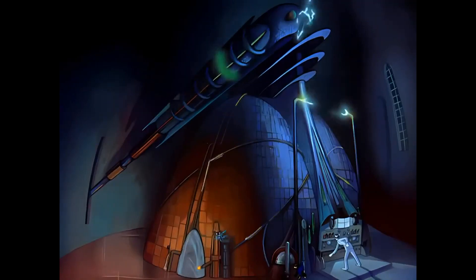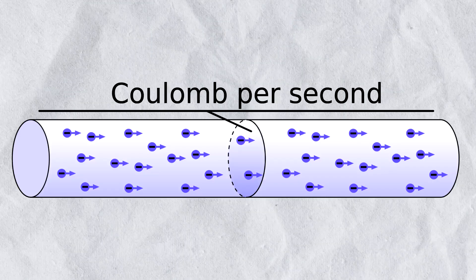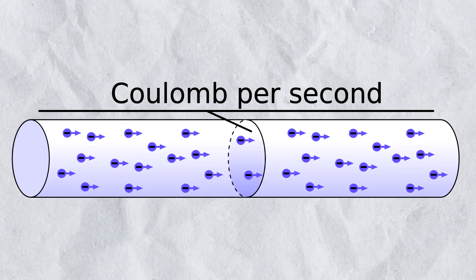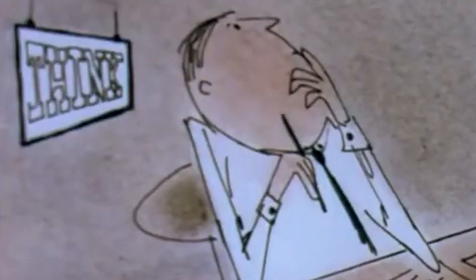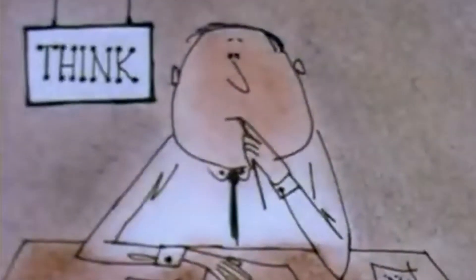The actual flow rate of the moving charge is measured in amperes. This tells us how many electrons are moving past a point per second. Now I'm sure some of you are starting to make the connection already.